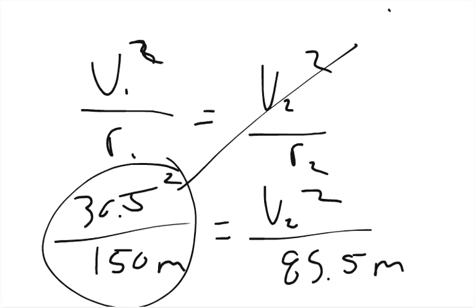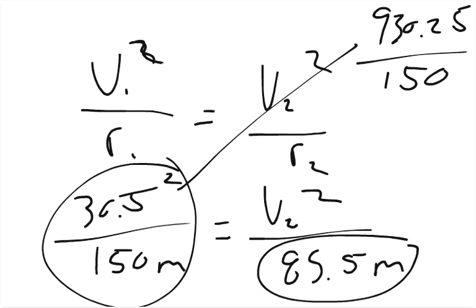So 30.5 squared is 930.25. And that's divided by 150. And so I'm also going to multiply 85 to this side. So 85.5 times 930.25 divided by 150.